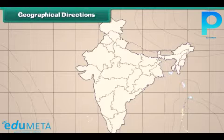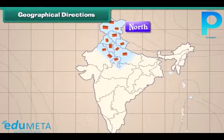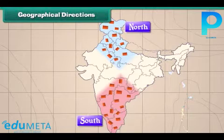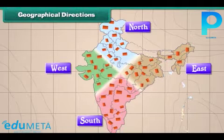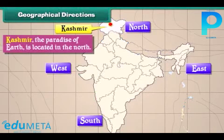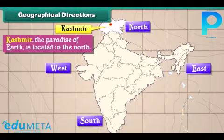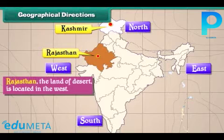People live at different places in India. Some places are in the north while some others are in the south. Some places are located on the east and some others are on the west. Kashmir, the paradise of earth, is located in the north. Rajasthan, the land of desert, is located in the west.